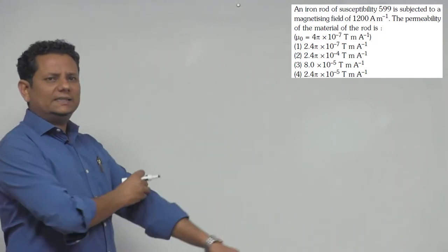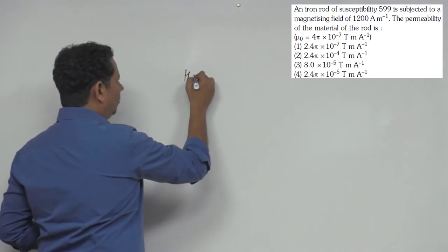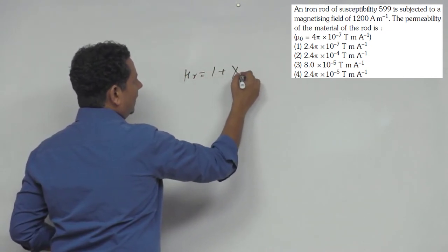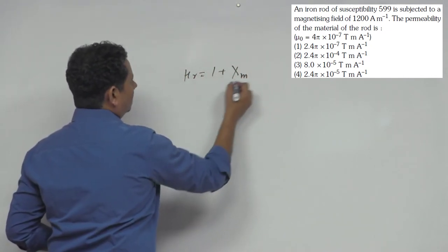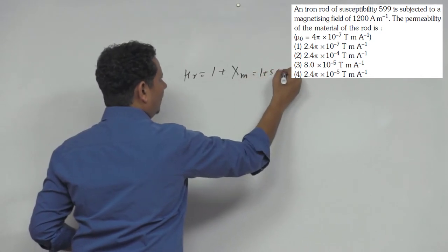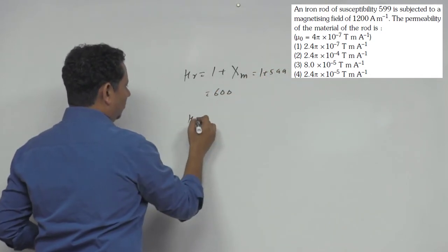4π × 10⁻⁷. We know that μr is 1 plus χm. So this becomes 1 plus 599, which equals 600.